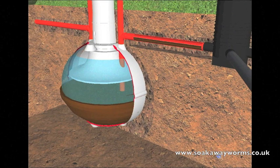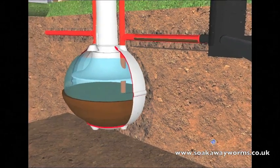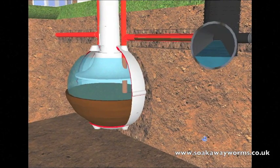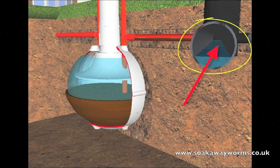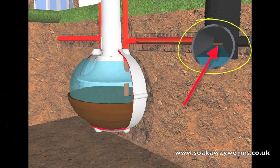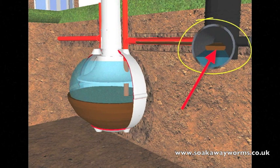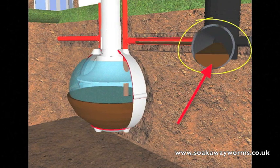Once the silt and sludge start making their way into the soakaway, it starts blocking all the pores up and blocking all the arteries and veins of the soakaway as well, making it very hard if not impossible to clear or unblock.